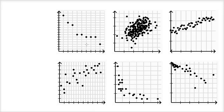What we have here is six different scatter plots that show the relationship between different variables. For example, in this one, the horizontal axis might have something like age, and then here could be accident frequency. These data points, maybe from some kind of statistical survey, show that when the age is 20 years old, this is the accident frequency — it could be a number of accidents per 100 — and when the age is 21 years old, this is the frequency. Data scientists or statisticians plotted all of these in this scatter plot.